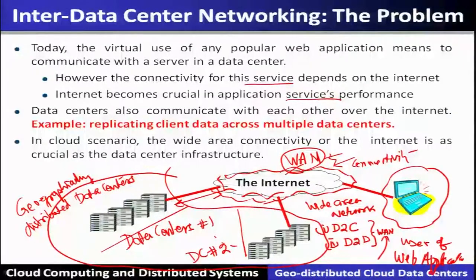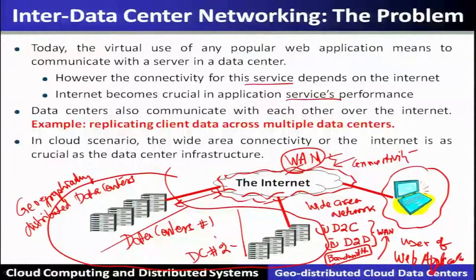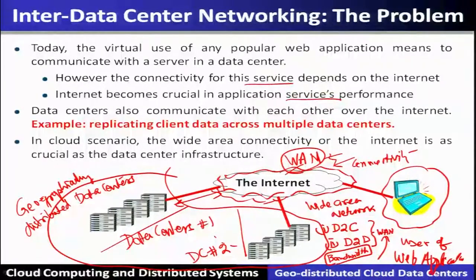The wide area network is highly dependent on bandwidth and there is a huge cost involved. If a lot of communication is done on the WAN or internet, there will be a huge cost for this bandwidth, and if it is not utilized, that cost becomes an overhead or waste. So how can this bandwidth, which is essential for running web applications, be optimized to provide services in the cloud at low cost?